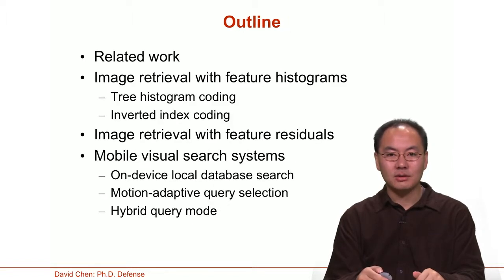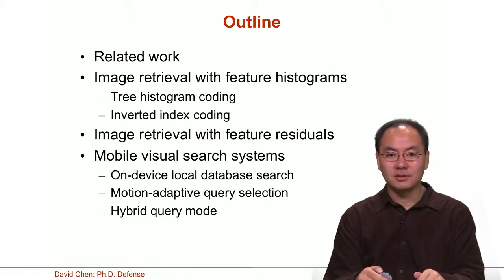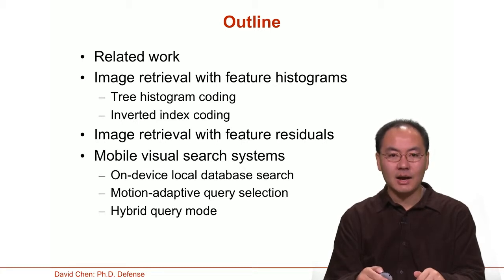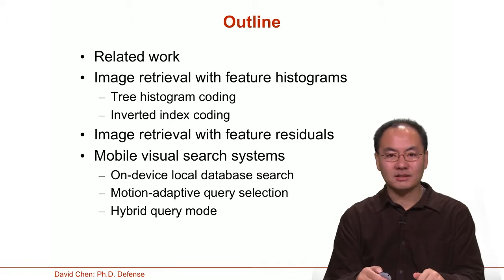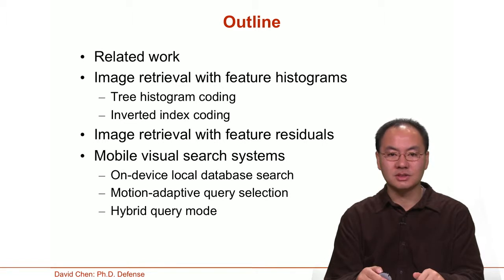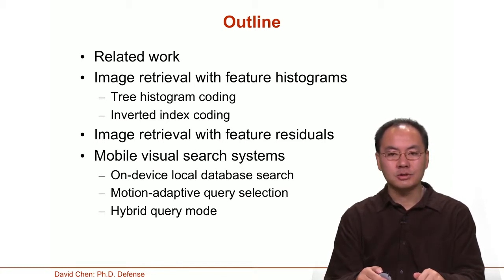Here's an outline of the remainder of the presentation. First, I will discuss related work in visual search. Then I will describe image retrieval with feature histograms, where I've developed two methods called tree histogram coding and inverted index coding. After that, I will describe image retrieval with feature residuals, where I've developed a very compact signature for searching a large database of images. I will then use this compact signature to build efficient mobile visual search systems, covering on-device local database search, a motion-adaptive query selection mechanism, and a hybrid query mode.